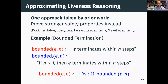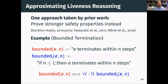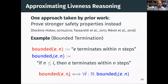Unlike termination, bounded termination is a step-indexed property. We can give a stratification bounded_I(E, N), which says: if N is less than or equal to the step index I, then E terminates within N steps. The property bounded(E, N) is equivalent to for all I, bounded_I(E, N), because if you want bounded_I(E, N), you just pick an I that's greater than or equal to N, and bounded_I(E, N) becomes synonymous with E terminating within N steps.